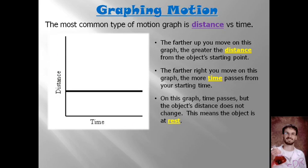In this graph, we have time passing because we're moving to the right, but the distance between the object and the reference point is not changing. So one way you can interpret this is that the object is at rest or not moving.